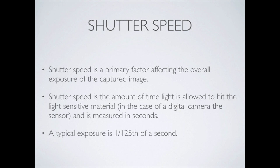Shutter speed is the other big factor. Aperture and depth of field are related. Shutter speed is the other thing that affects the overall exposure of the captured image — that is, how long is the light-sensitive material, the film or the sensor, exposed to the light itself. Digital SLRs are great for this. There's a click because there's a mechanical lifting of a mirror, and that up and down is what exposes the light-sensitive material. Shutter speed is the amount of time that light is allowed to touch the sensor, and it's usually measured in fractions of seconds. A typical exposure is like 1/125th of a second.